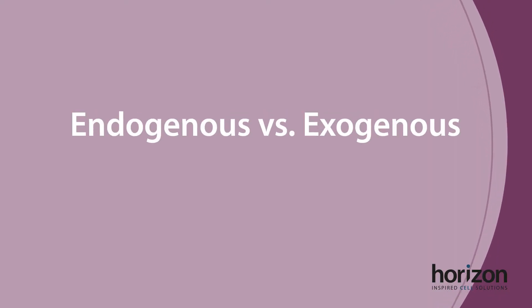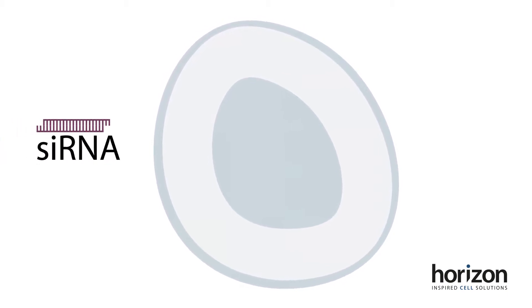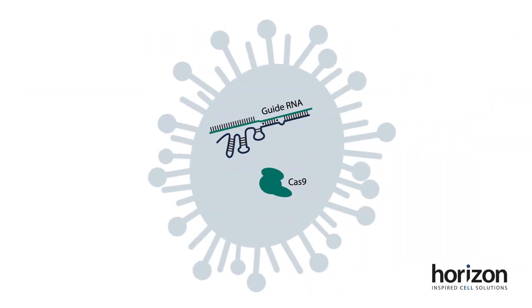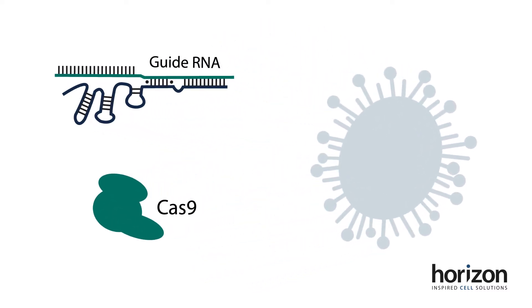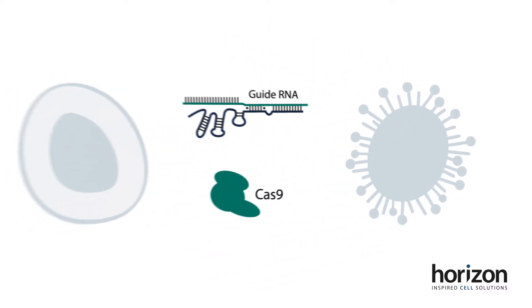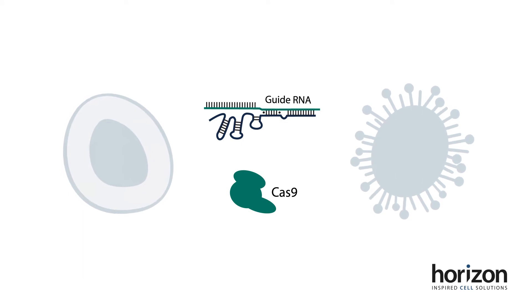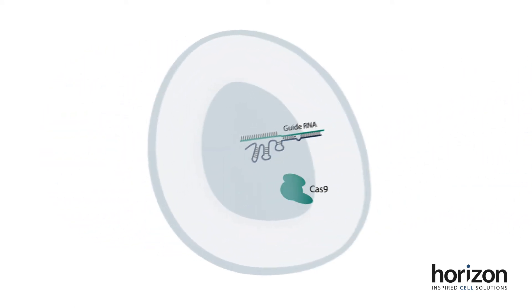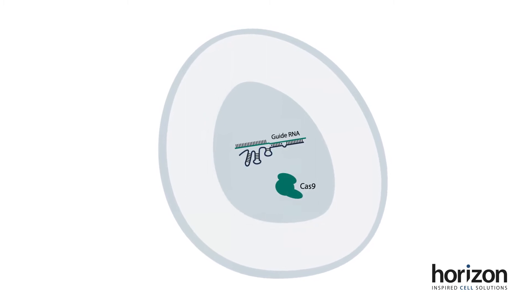Endogenous versus exogenous. RNAi takes advantage of the eukaryotic endogenous microRNA machinery, requiring only a small RNA trigger for gene knockdown. On the other hand, CRISPR-Cas9 is exogenous to eukaryotes, as it is derived from an adaptive immune system in bacteria. Therefore, the native bacterial protein, Cas9, must be delivered or expressed with high efficiency, in addition to a guide RNA, to achieve gene knockout.